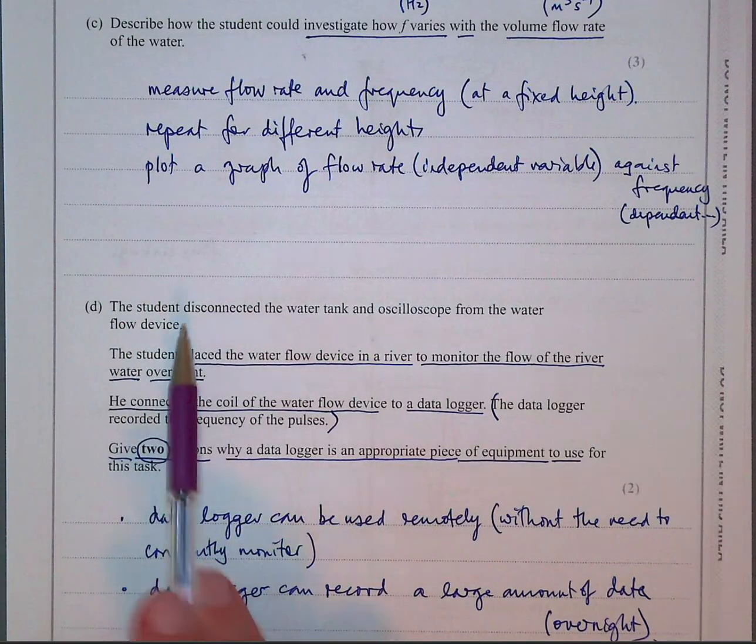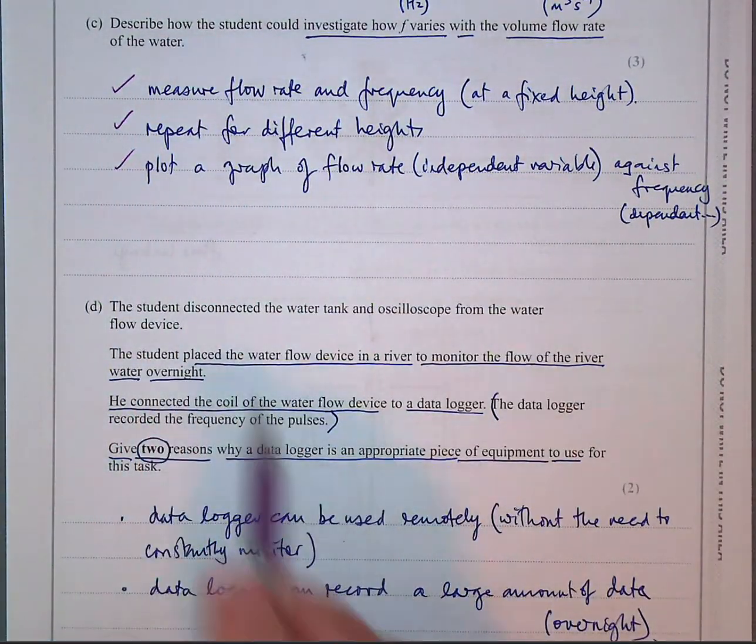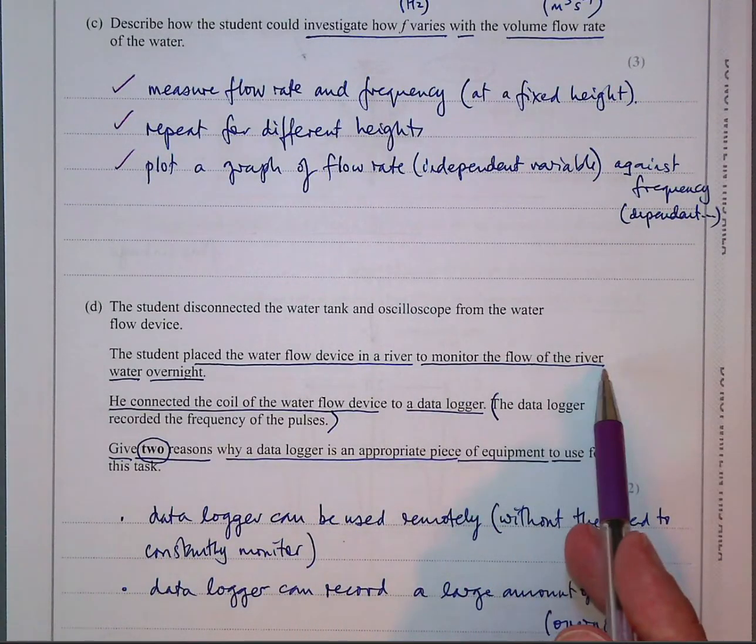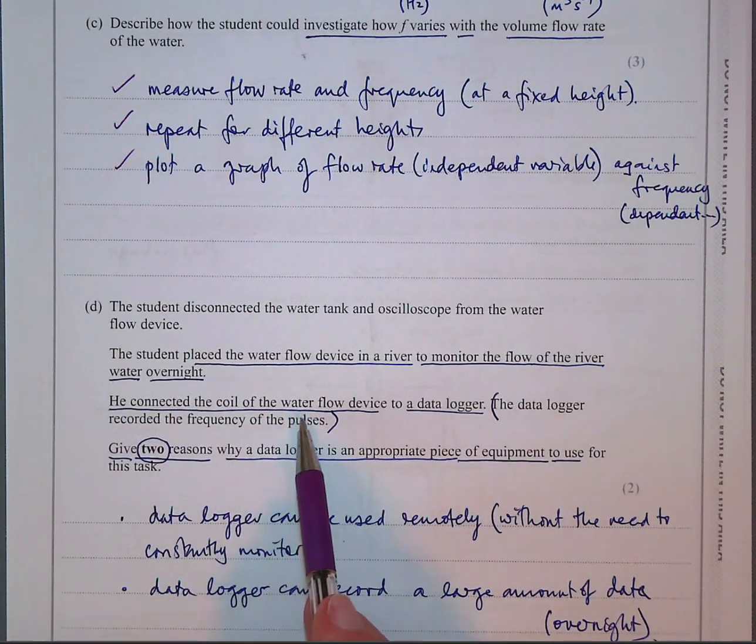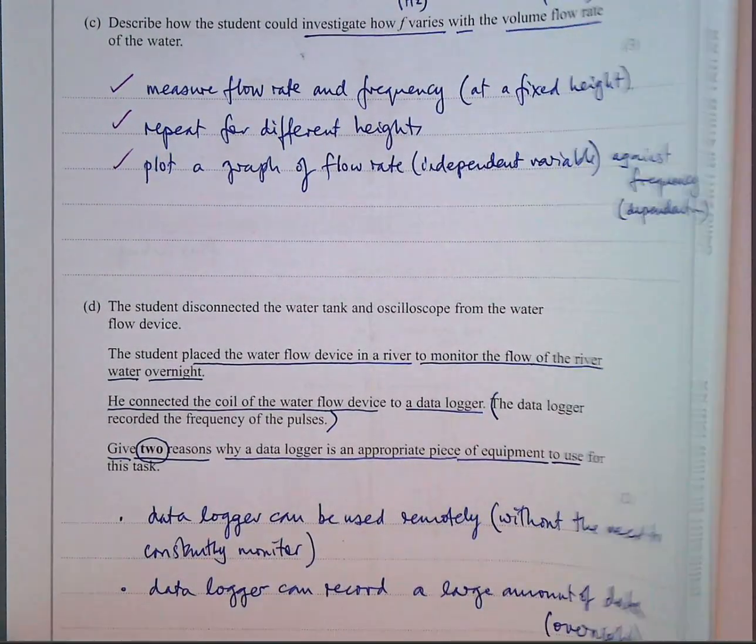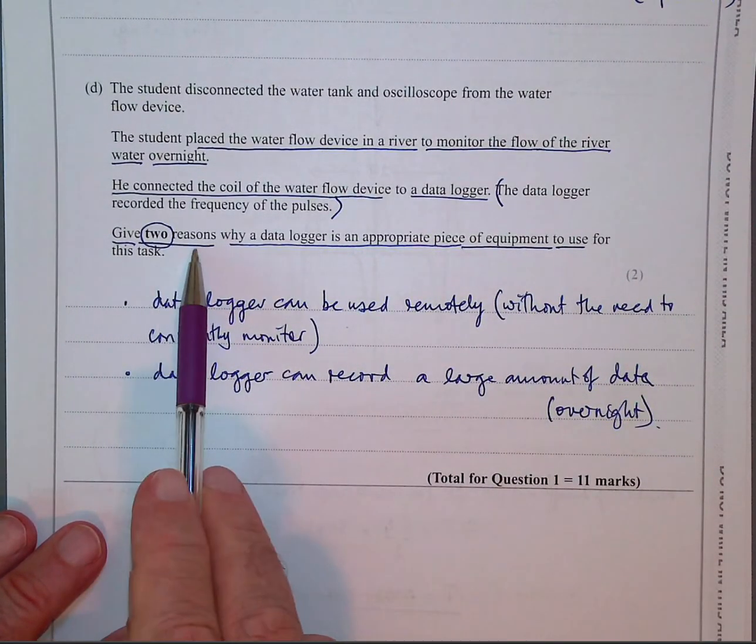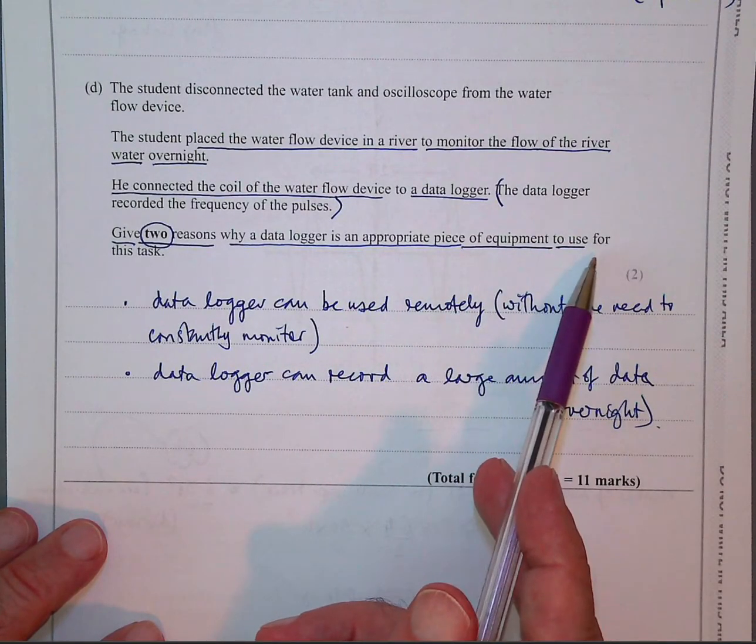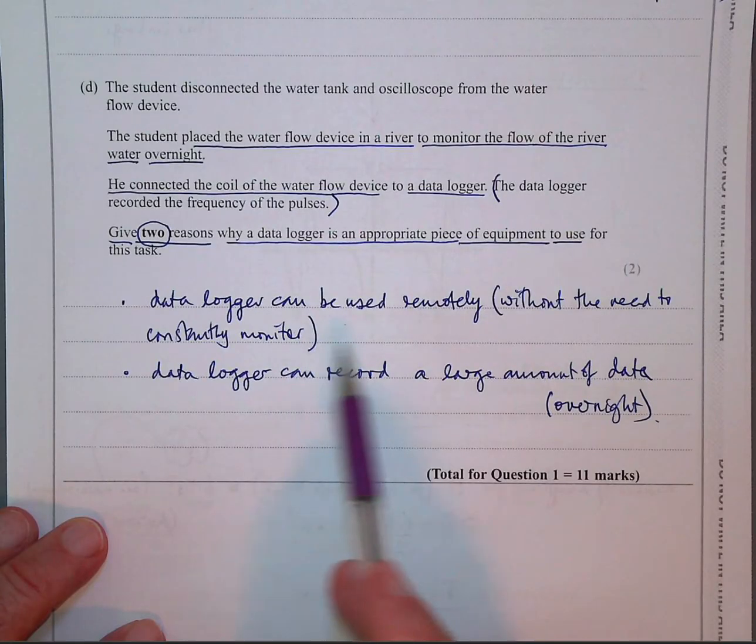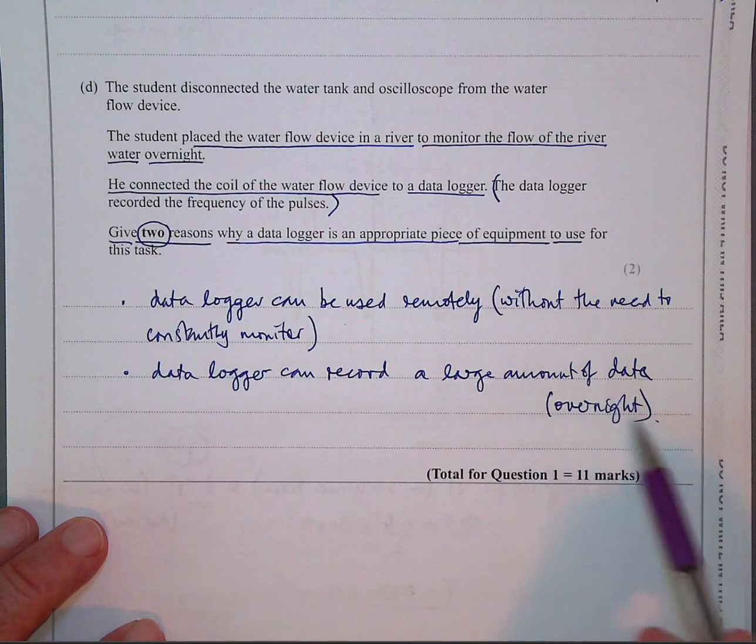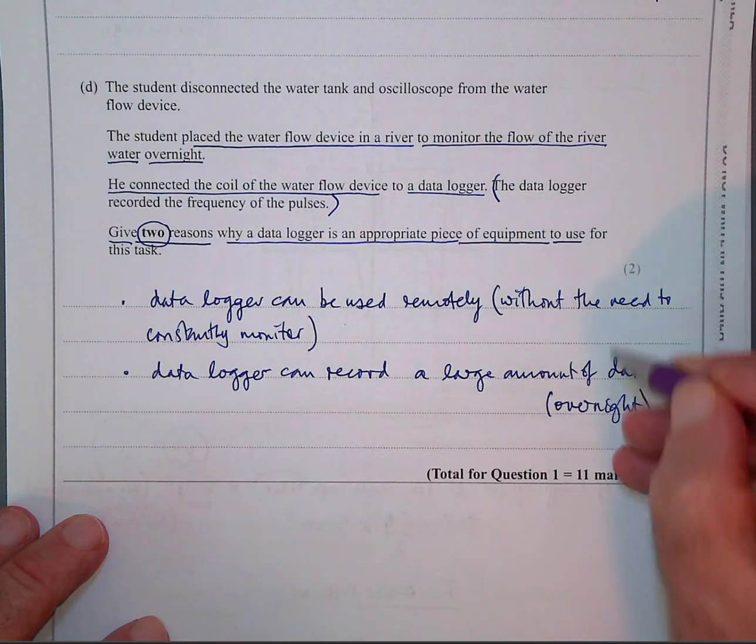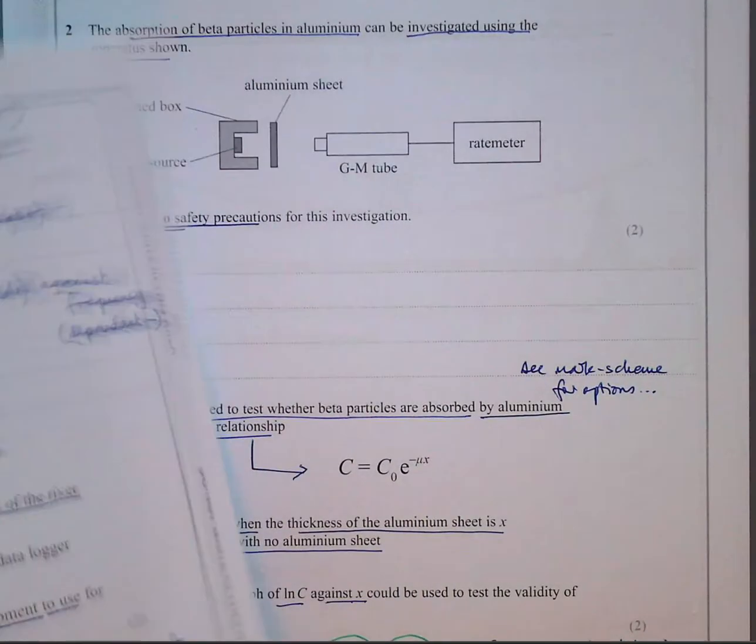So then it says you get one mark for each of these lines. One, two, three. The student then disconnected the water tank and the oscilloscope from the flow device. The student placed the water flow device in a river to monitor the flow of the river overnight. He connected the coil of the water flow device to a data logger because obviously he's doing it overnight. The data logger recorded the frequency of the pulses. Give two reasons. They want two reasons why a data logger is an appropriate piece of equipment to use for this task. Well, data logger can be used remotely without having to be there all the time, without the need to constantly monitor it, and the data log can record a large amount of data and over a large amount of time. So overnight it will keep all the records going for you. So it's a perfect use of technology. So one for this and one for that will get you two marks. So that's the first eleven points.